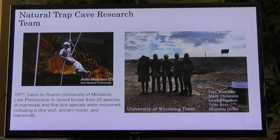The site was discovered in 1968 by cavers. And they went in and they mapped it and tied off of their VW bugs and basically discovered this giant cave system. But the first research was done by Carol Jo Russian at University of Montana. And they found 20 species of mammals, five bird species, including the dire wolf, ancient horse, mammoth, tons of cheetah, American lion. So it's really interesting and probably one of the most significant faunal assemblages of the late Pleistocene in North America.